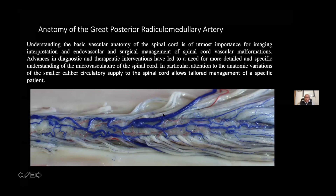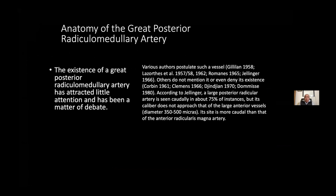In particular, attention to the anatomic variation of the smaller caliber circulatory supply to the spinal cord allows tailored management of specific patients. This is a posterior aspect of the spinal cord, and this is a great posterior vein. The existence of this artery has attracted little attention and has been a matter of debate. Various authors postulate such an artery — Guillain, Lasortes, Romanis, and Jenninger. Others do not mention it or even deny its existence.